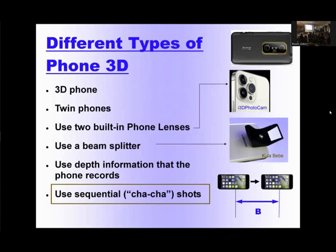When we talk about phone 3D, there are different kinds. First, there is such a thing as a 3D phone — not made anymore, but at some point they made them. Then people combine two phones together to take stereo photos. If two people use about the same phone, you can combine them with Bluetooth and fire them at the same time.